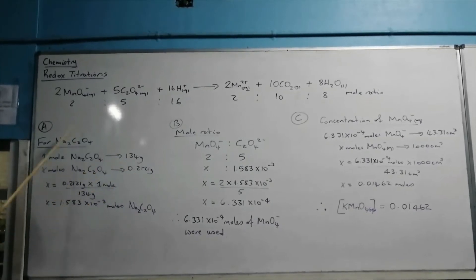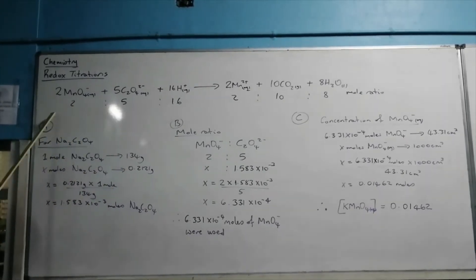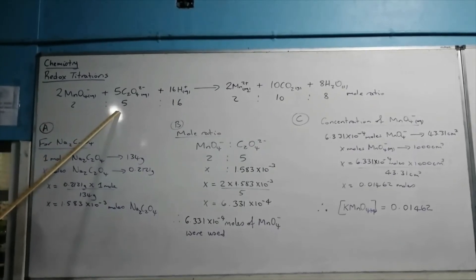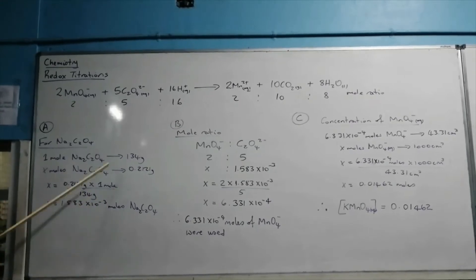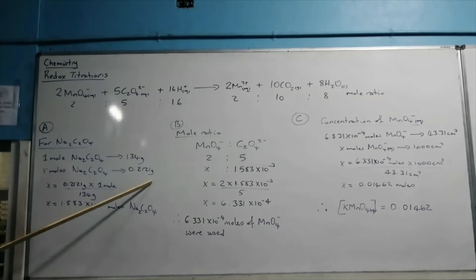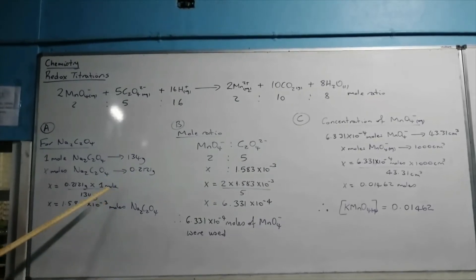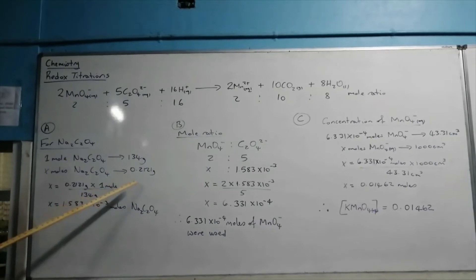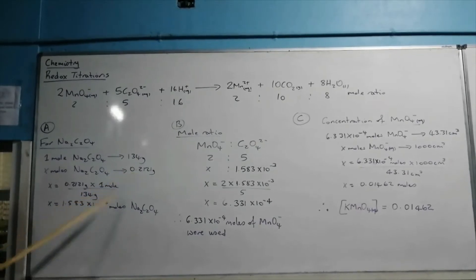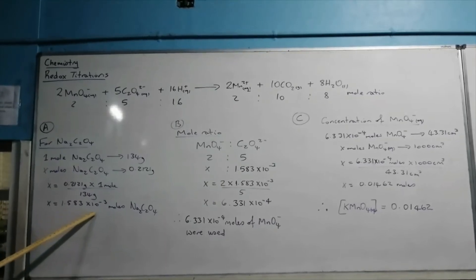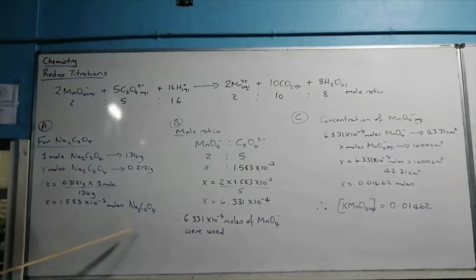Based on the mole ratio, we see there's a 2 to 5 mole ratio between the permanganate ions and the oxalate ions. We know that 0.2121 grams of sodium oxalate was used to make the solution, so we find the number of moles of sodium oxalate present in this mass. By cross multiplication, we get the answer being 1.583 × 10⁻³ moles of sodium oxalate.